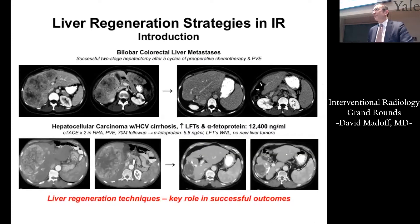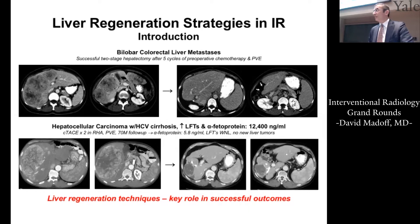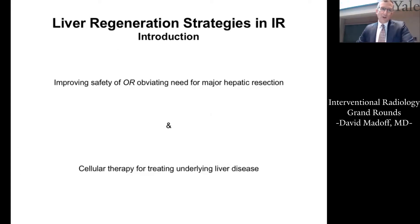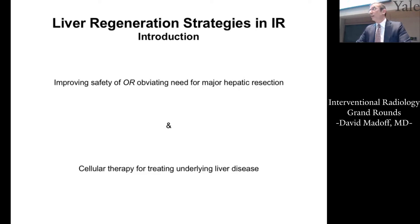Liver regeneration is so fascinating because you can take a patient with bilobar colorectal metastases who has absolutely no chance of curative resection and ultimately get that patient to resection using liver regeneration techniques. The same is true of a patient with a very large HCC — by using liver regeneration techniques, we can get that patient to live many years later. The goal for IR is to improve the safety of, or obviate the need for, major liver resection. Another topic I'll discuss towards the end is cellular therapy for treating underlying liver disease.